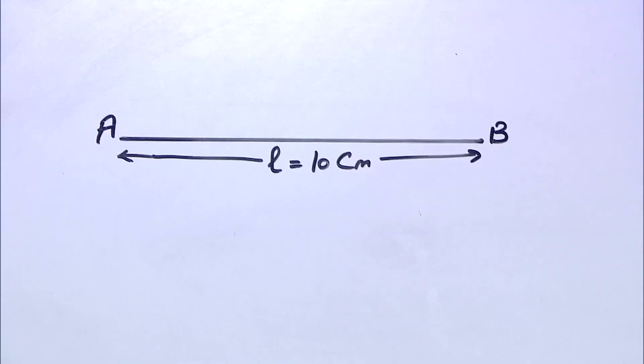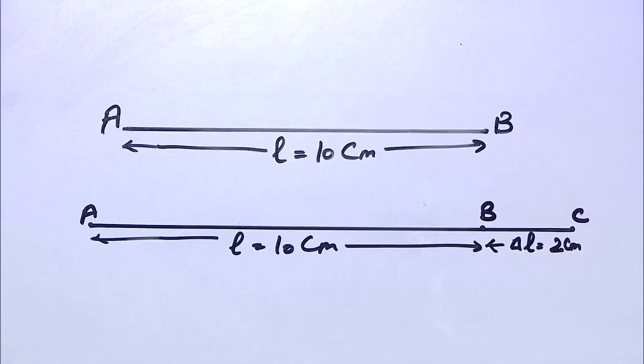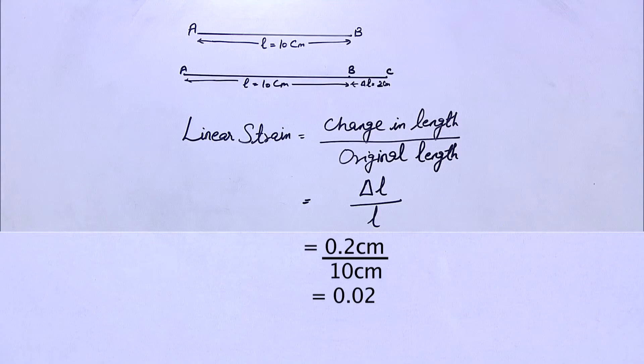For example, before the stretch we take the length of the wire to be 10 cm, and after the stretch it comes out to be 10.2 cm. Therefore, the difference between both situations gives the change in length, which is 0.2 cm, and the original length is 10 cm. When we take the ratio of the change in length to the original length, it provides a pure number representing the longitudinal strain.